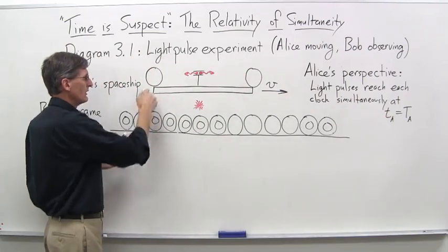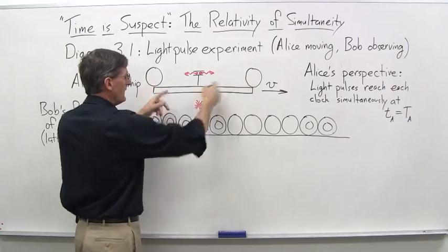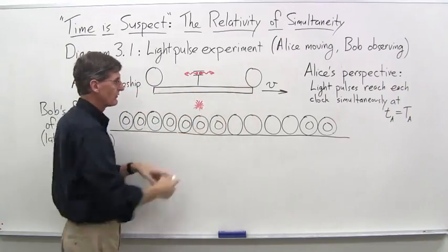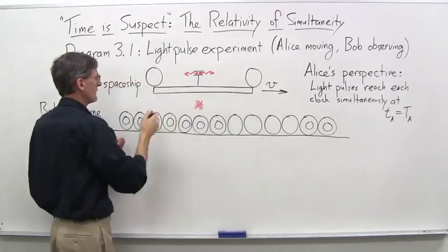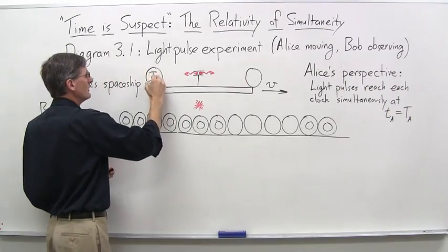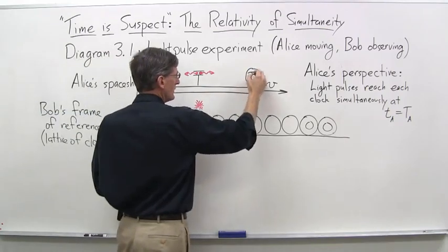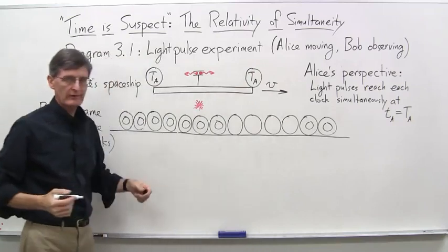So when they hit, her clocks will read, at the beginning here they read zero, light pulses go off. She's just sitting there watching this. At the end, each of these clocks will read T sub A. And Alice will be saying, what's the big deal here?